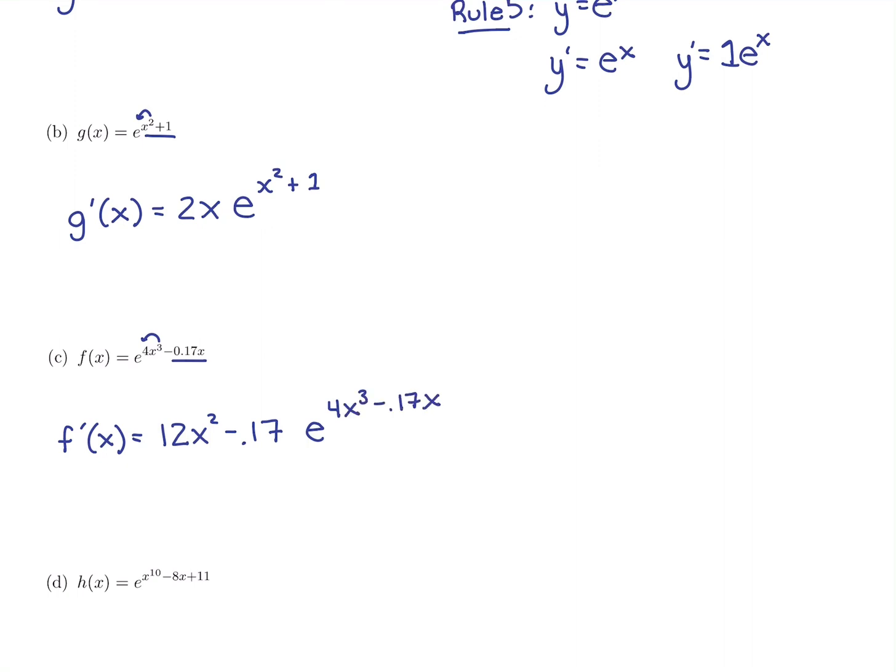And this is an incorrect answer. Why would that be? Let's check my work. What did I do wrong here? Derivative of 4x cubed, you bring down the power, subtract with a new power. We did that. This is our mini rule. Derivative of negative 0.17x is negative 0.17. We did the whole derivative of the power, and then we copied down e to the original power. So what's wrong with this answer? Can you tell?